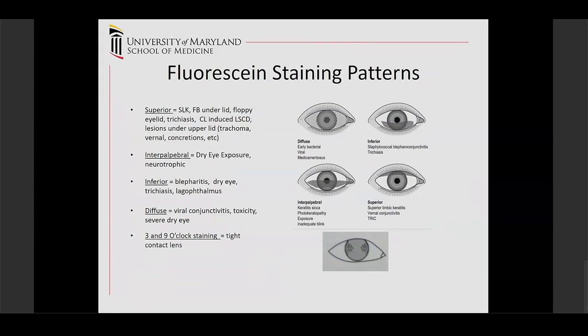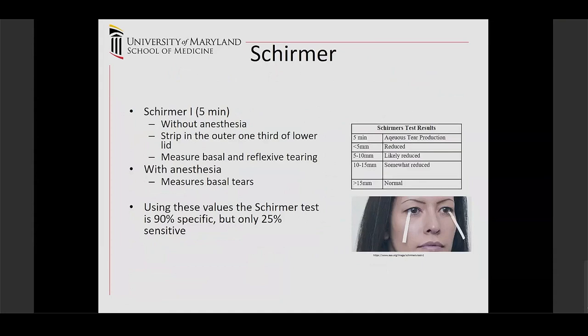Schirmer's test uses strips placed in the outer one-third of the lower eyelid. The patient closes their eyes for five minutes, and then you get a measurement of tears produced. Less than 5 mm on the strip is pretty specific for dry eye disease, though not as sensitive, but it is a very useful test. Without anesthesia you're measuring both basal and reflex tearing; with anesthesia, only the basal tears.